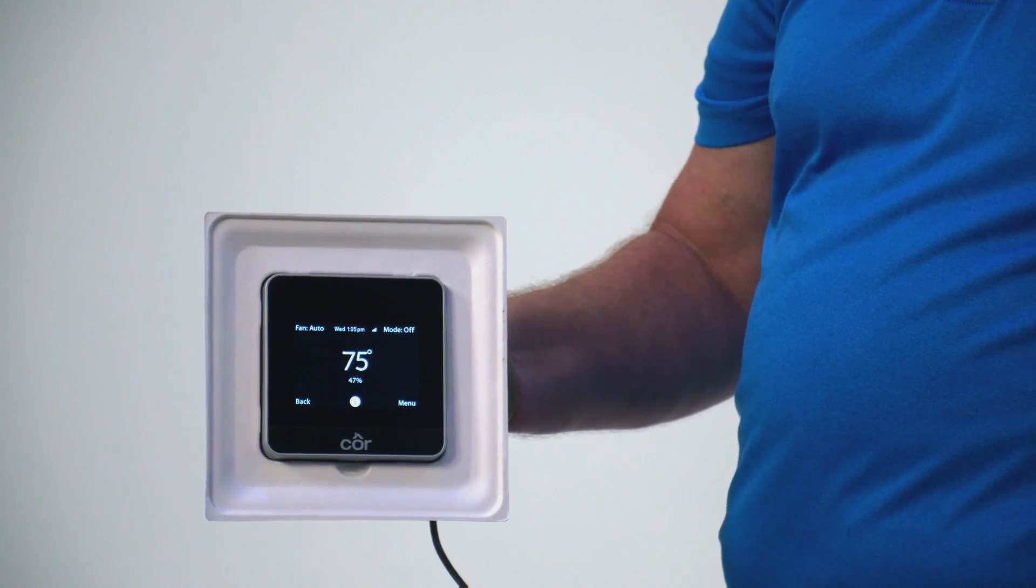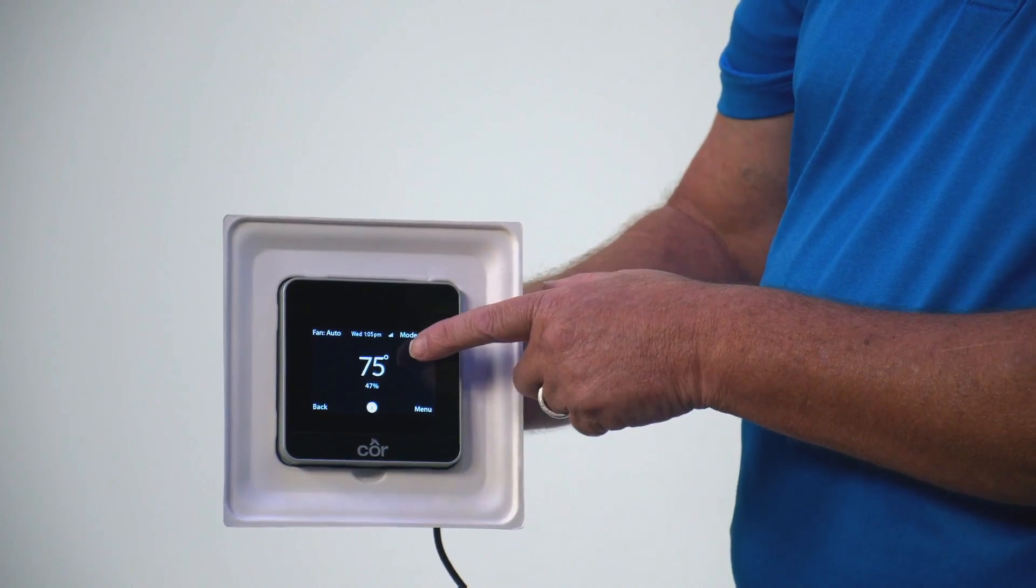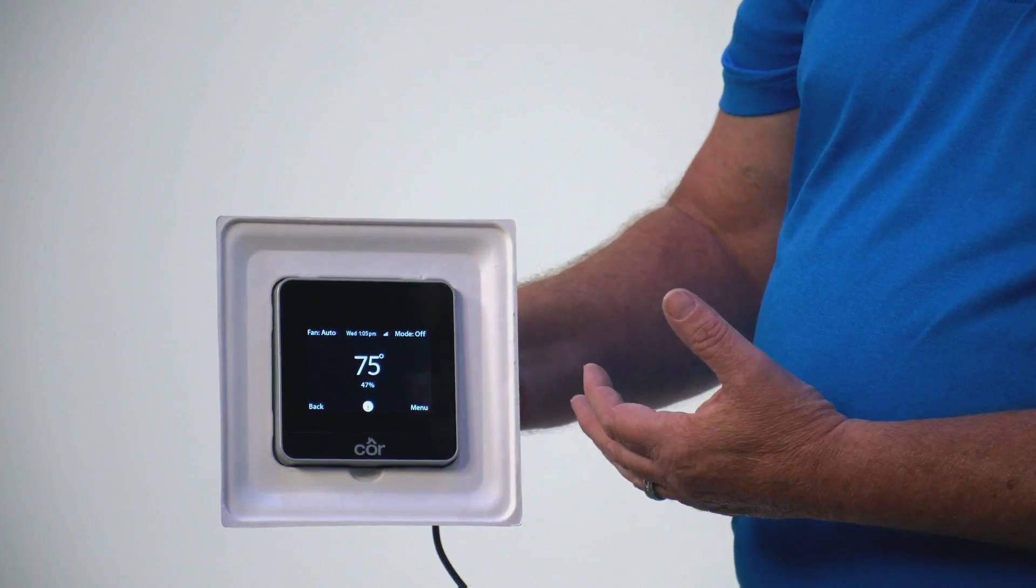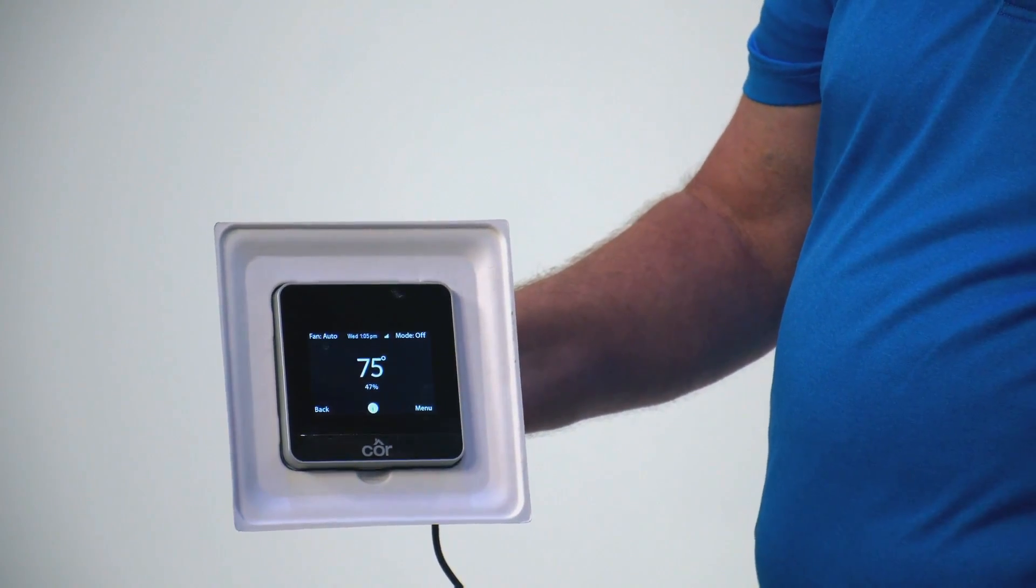All right, Tom. So we've got our Core thermostat fired up. Tell us what we're looking at here. Right now, what we're looking at is the number 75. That's the actual temperature in your house. And directly beneath that is the humidity level in your house.